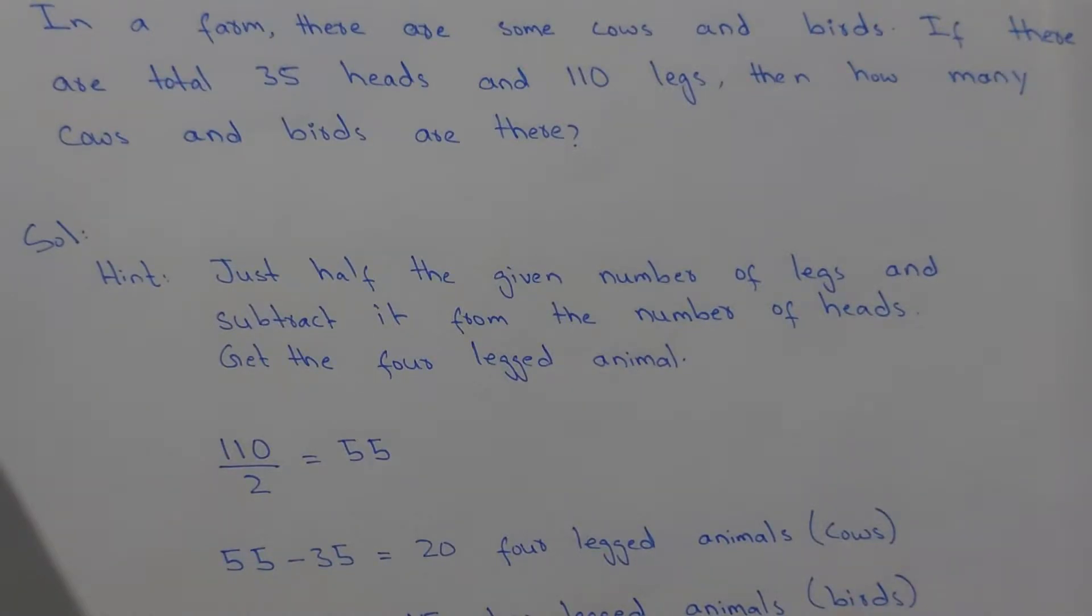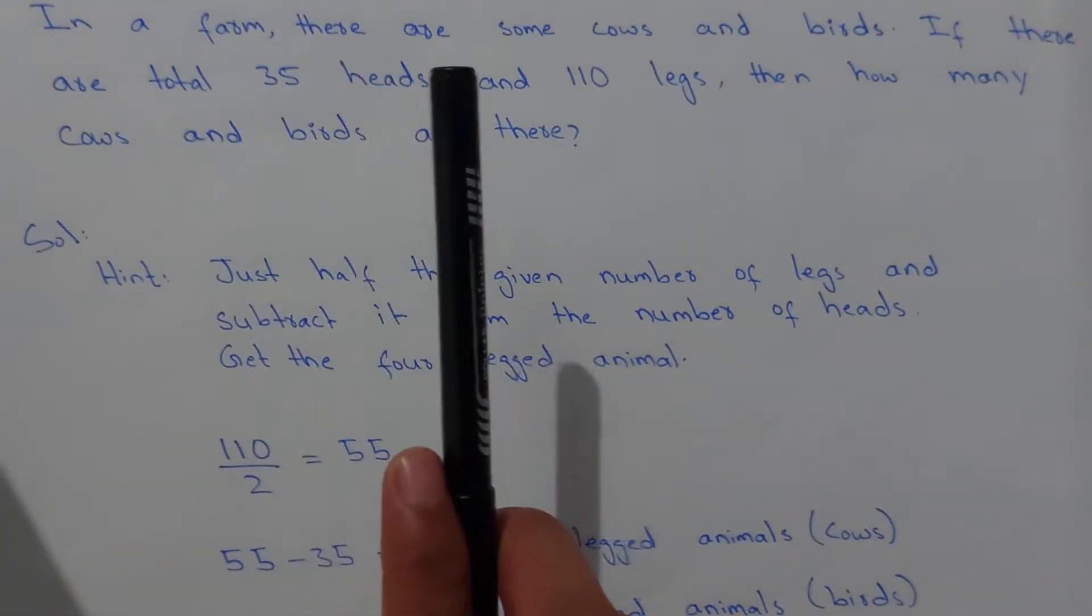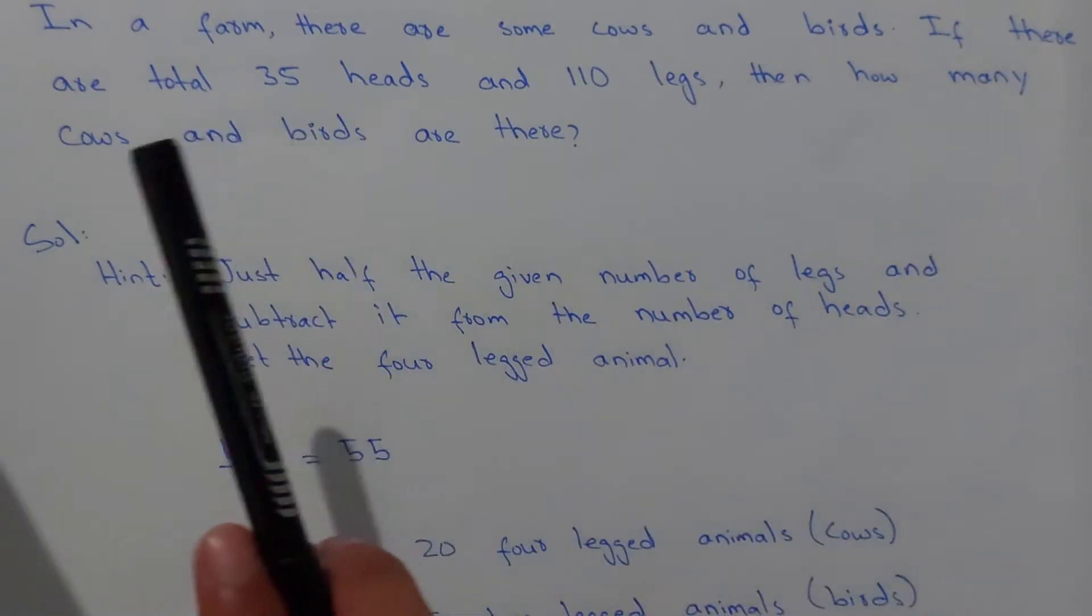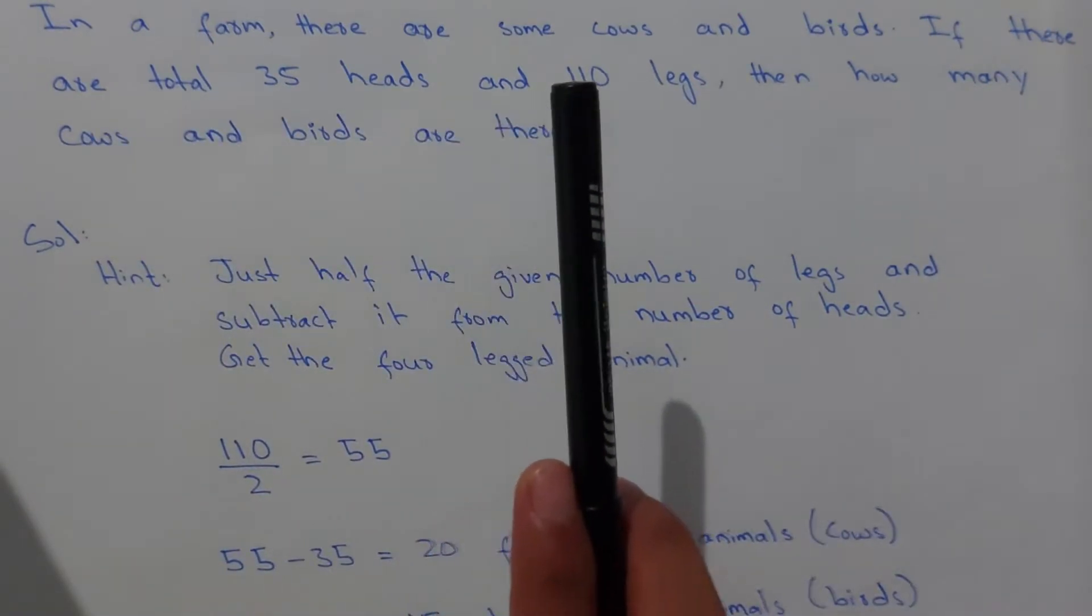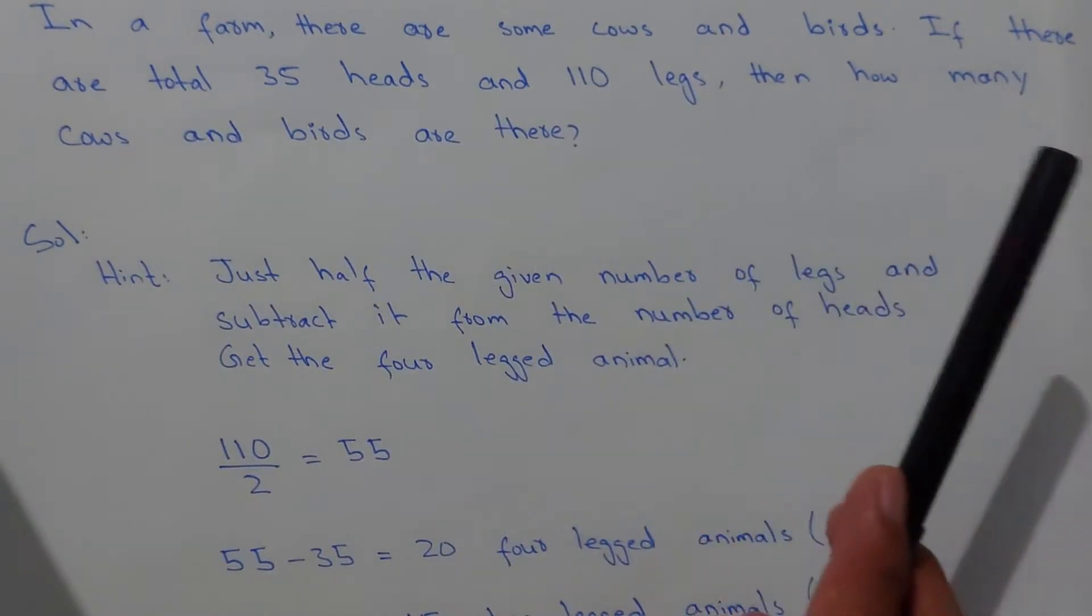Hello, what's up guys? Welcome to the new video. In this video we have this word problem. The problem says: in a farm there are some cows and birds. If there are total 35 heads and 110 legs, then how many cows and birds are there?